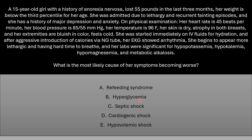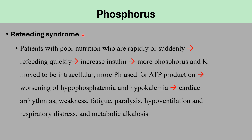The correct answer is refeeding syndrome. The major finding is hypophosphatemia — extremely low phosphorus levels. Patients with poor nutrition already have low phosphorus. When they are rapidly or suddenly fed with high calories, this increases insulin levels. Insulin moves phosphorus and potassium intracellularly, causing more hypophosphatemia and hypokalemia. Additionally, the body uses phosphorus for ATP production, further worsening hypophosphatemia. Worsening hypophosphatemia and hypokalemia cause cardiac arrhythmias, weakness, fatigue, paralysis, hypoventilation, difficulty breathing, respiratory distress, and metabolic alkalosis.